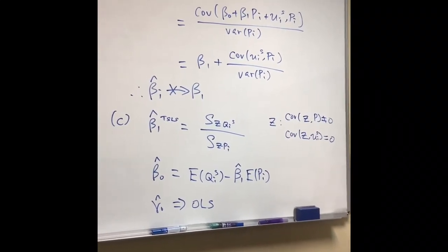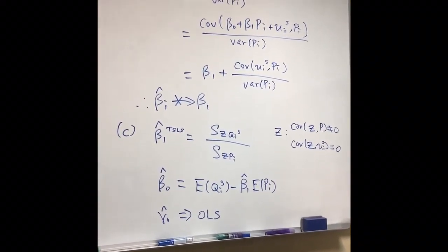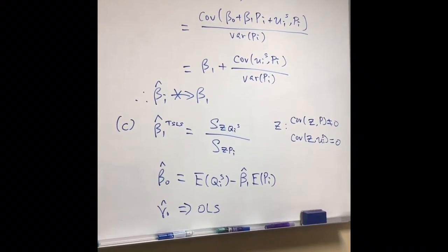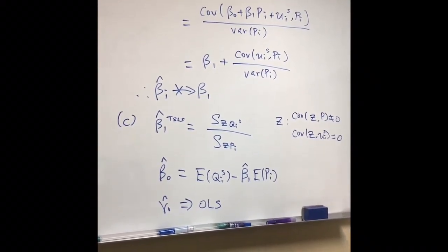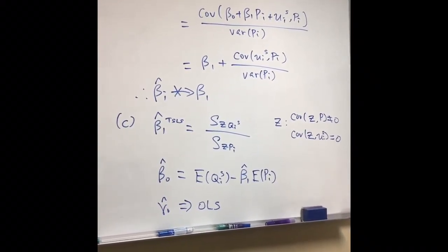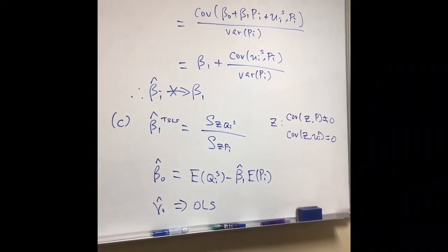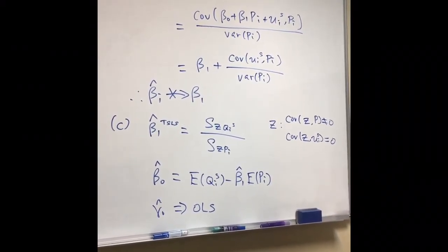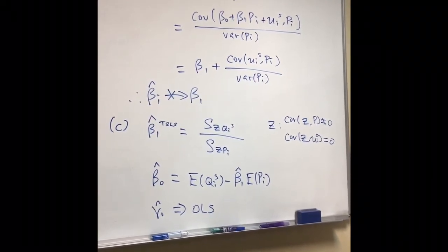Since the covariance of Ui and the independent variables are not equal to zero, you need to use an instrument to deal with the problem. You need to find an instrument Z such that the covariance of Z and PI is not equal to zero.